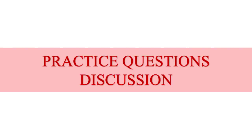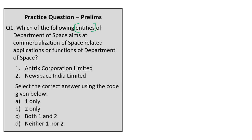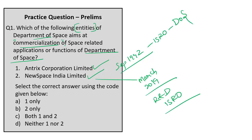In the final session, practice questions are discussed. Question 1 asks which entities of the Department of Space aim at commercialization of space-related functions. Antrix Corporation Limited was set up in September 1992 to market products and services of ISRO, and New Space India Limited was set up to commercially exploit R&D work carried out by ISRO. So both entities aim at commercialization of space-related functions. The answer is option C, both 1 and 2.